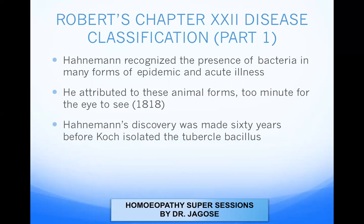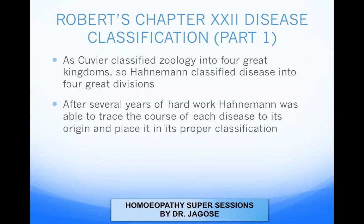Hahnemann attributed these to animal forms too minute for the eye to see — bacteria that could not be seen by the naked human eye. His discovery was made 60 years before Koch isolated the tubercular bacillus, making Hahnemann a precursor of bacteriology. Just as Cuvier classified zoology into four great kingdoms, so Hahnemann classified diseases into four great divisions.